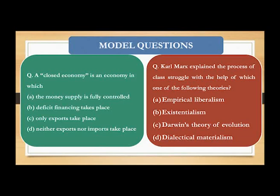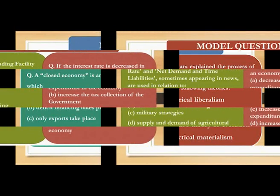Next question is based on the great philosopher, sociologist and economist Karl Marx. The question is: Karl Marx explained the process of class struggle with the help of which one of the following theories? Option A: Empirical liberalism. Option B: Existentialism. Option C: Darwin's theory of evolution. Option D: Dialectical materialism. The right answer is dialectical materialism.